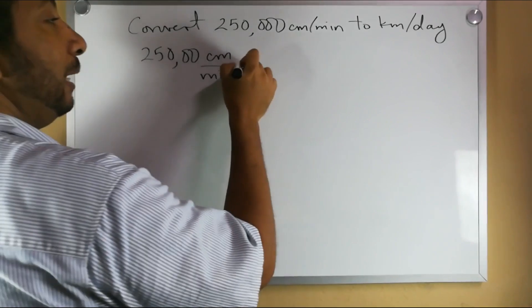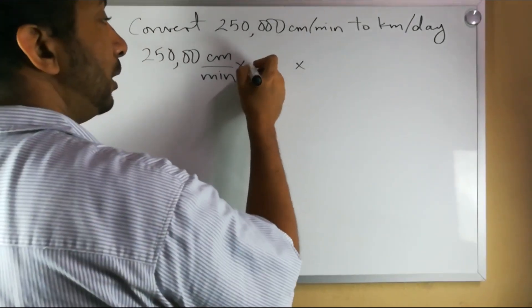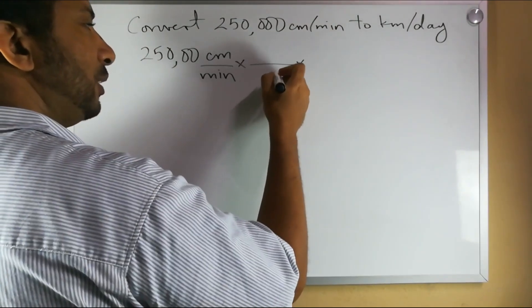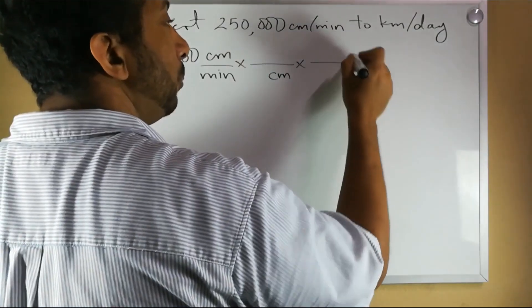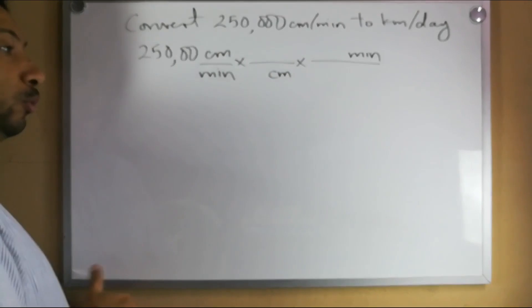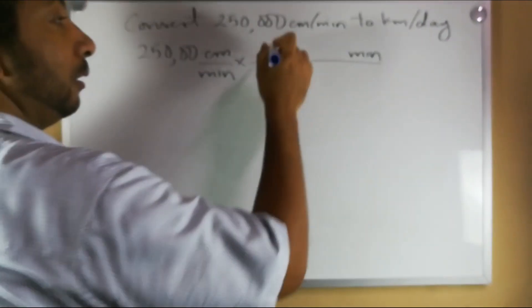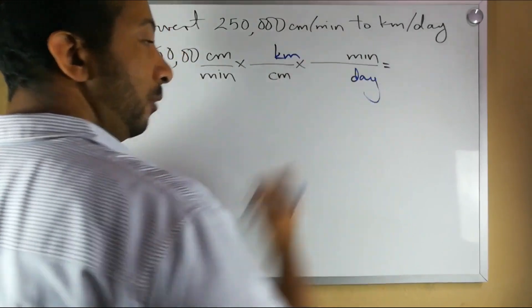Then we multiply that by two fractions that are both equal to one. So the first fraction we will multiply it such that we get rid of the centimeters. The second fraction we will multiply it such that we get rid of the minutes. When we do so we will be left with kilometers and we will be left with days.